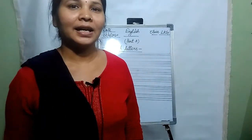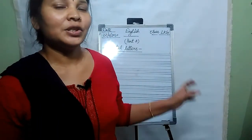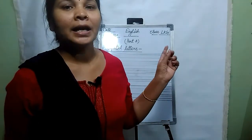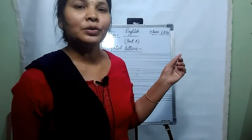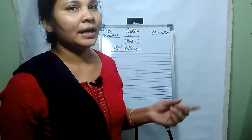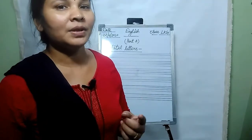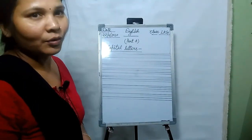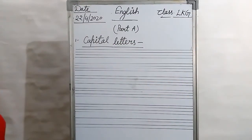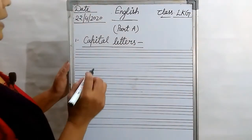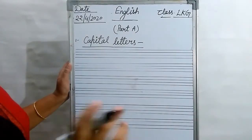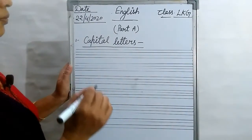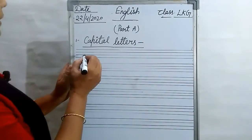Good morning LKG class. This is your English subject and I am going to teach you about capital letters A, B, C, D. So look at the blackboard. Let's start our class. Capital letters means Badi A, B, C, D. So first we write capital letters.